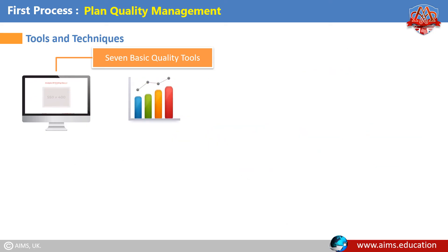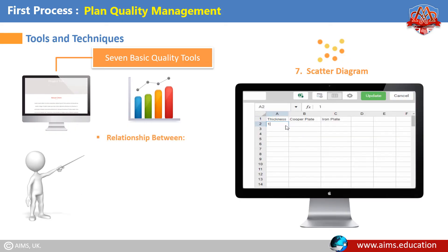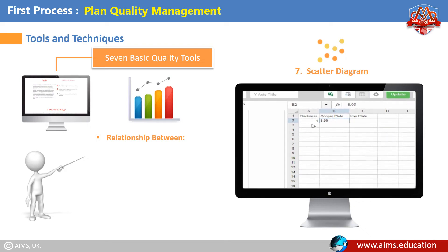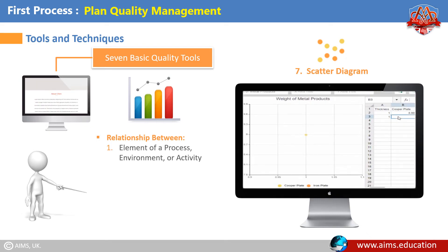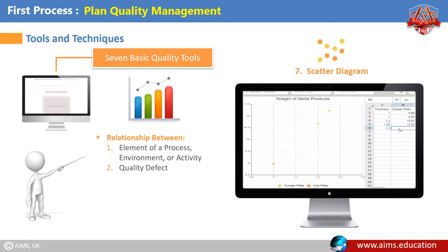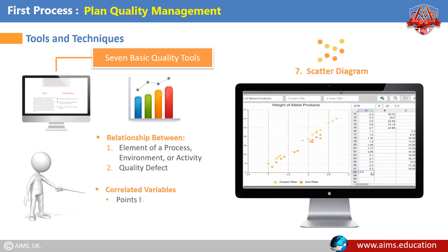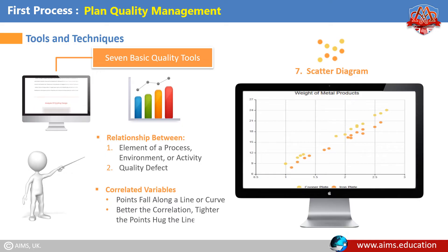The seventh basic quality tool — Scatter Diagram: It is a graph that shows the relationship between two variables. Scatter diagrams can show a relationship between any element of a process, environment, or activity on one axis, and a quality defect on the other axis. If the variables are correlated, the points will fall along a line or curve — the better the correlation, the tighter the points will hug the line.